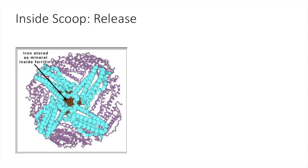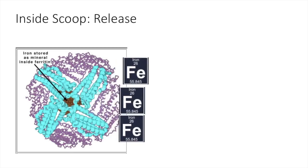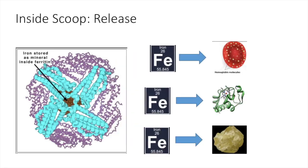The main purpose of ferritin is to store iron and release it in a controlled fashion. Ferritin provides a reserve of iron that can be used for synthesis of molecules like hemoglobin, cytochromes, and iron sulfur compounds.